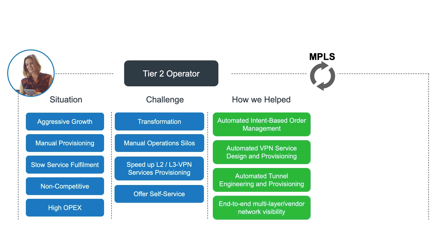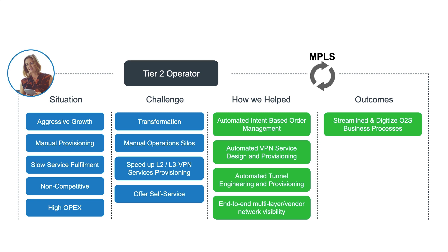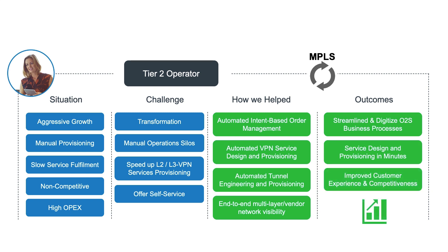With the implementation of Blue Planet and a modern order management system, the operator was able to streamline and digitize order-to-service business processes. The operator can enter an order that flows through Blue Planet, which automates the design — such as the path based on the ROA path computation engine — and then the provisioning of that path via MDSO, covering both tunnels and the VPN service, all in a matter of minutes. As a result, they now expect to be more competitive and provide an improved customer experience.